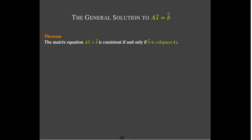Let's talk about the general solution to the matrix equation AX equals B. A super important fact is that the system is consistent if and only if the right-hand side vector B belongs to the column space of A. The matrix-vector multiplication A times X really represents a linear combination of the columns of A, so AX equals B means that B can be written as a linear combination of the columns of A, which means it belongs to the column space of A.